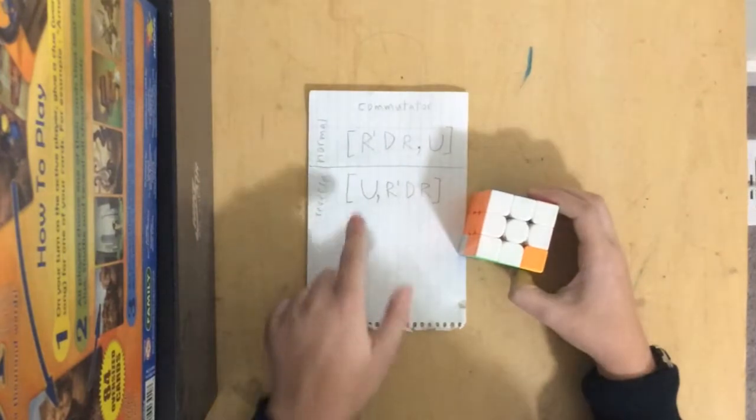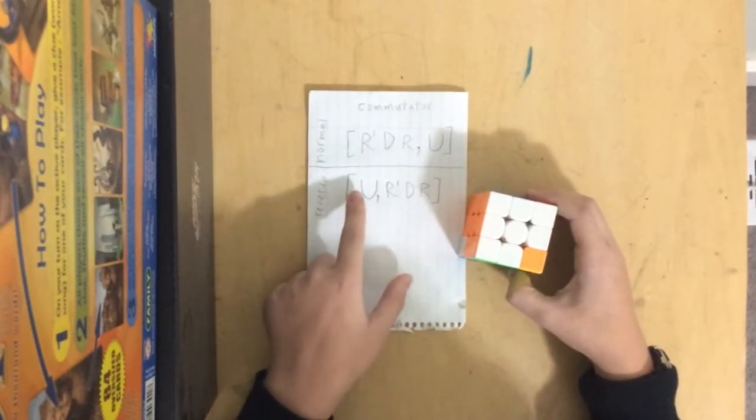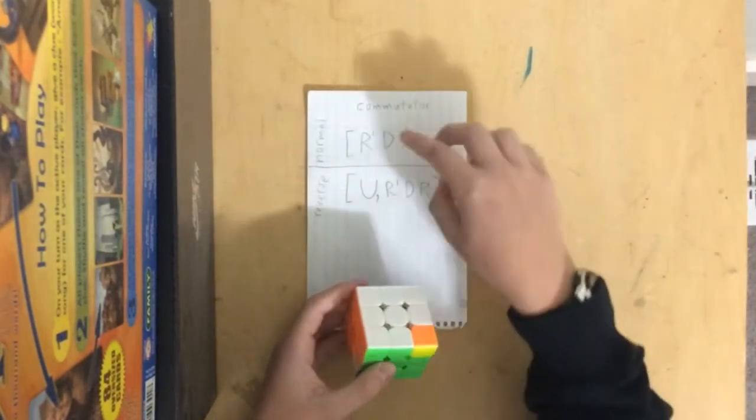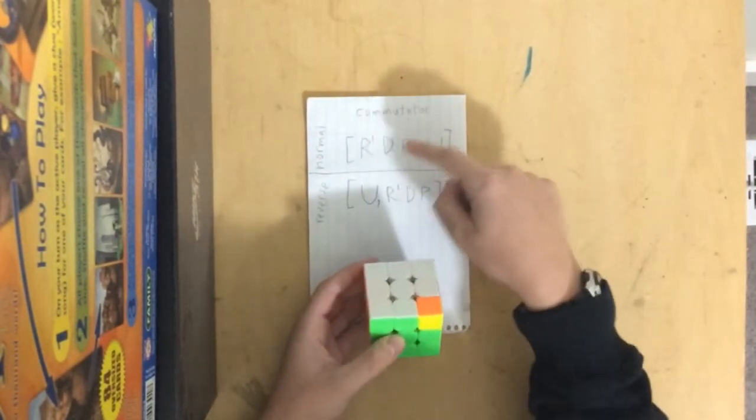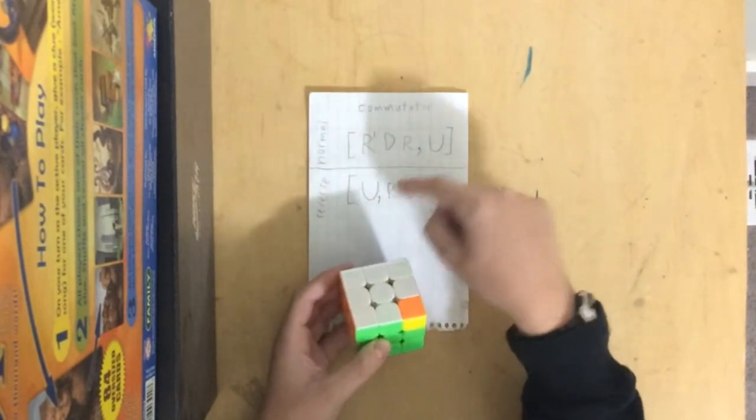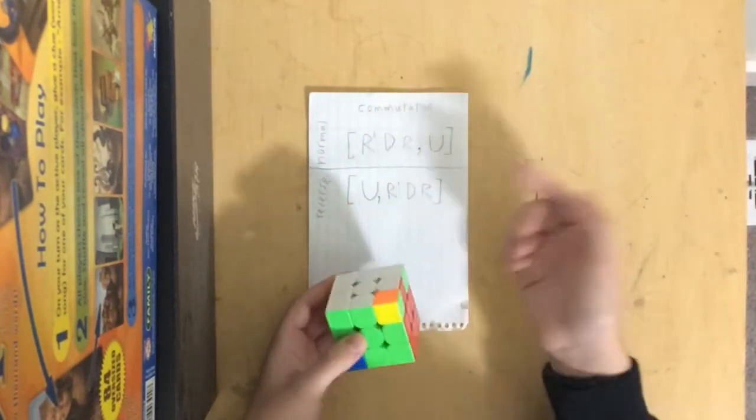So then in reverse, you pretty much just switch these two parts of the comma around, so instead of R' D' R comma U, it's U comma R' D' R.